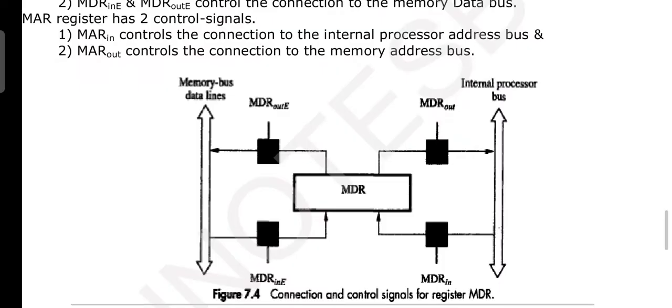You can see two-way gating here for MDR. Two output gates and two input gates. Dedicated gate towards internal processor bus, as well as dedicated gate towards the memory bus data line.